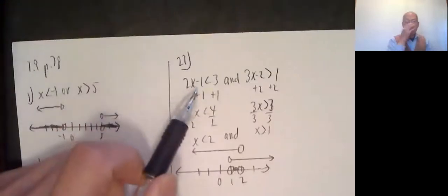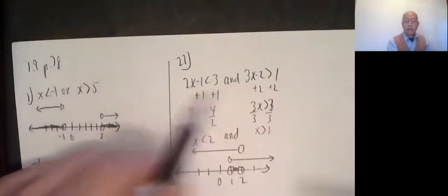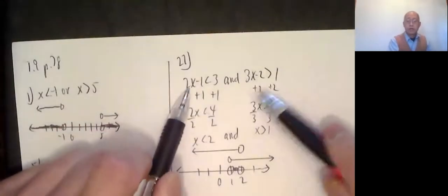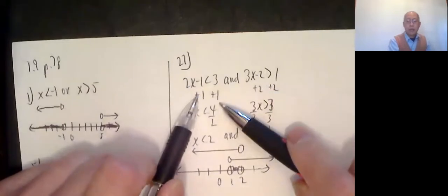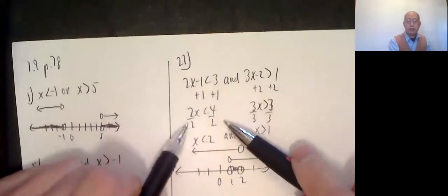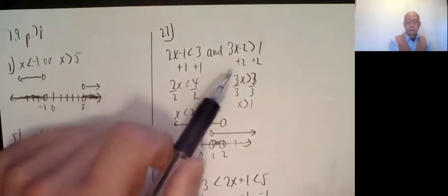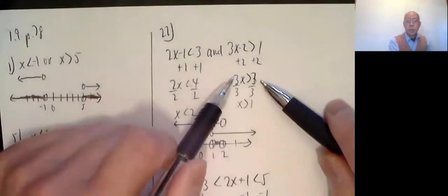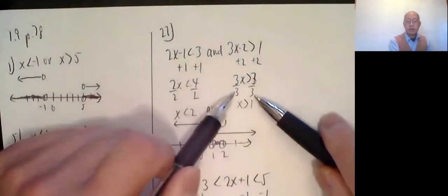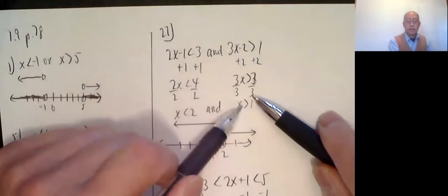Okay, 27. Again, you have to do a little bit of work. The connecting word is and. So this one and this one. This one add 1: 2x is less than 4. Divide by 2, x is less than 2. No need to change the inequality symbol because I divided by a positive. Add 2: 3x is greater than 3. Divide by 3, that's a positive number. No need to change the inequality symbol.